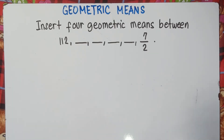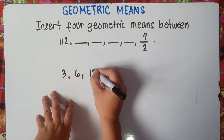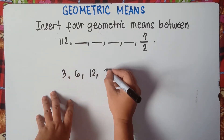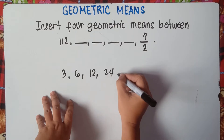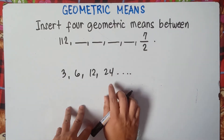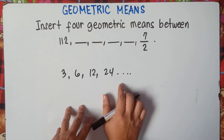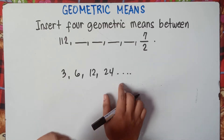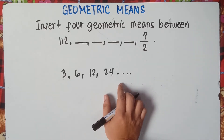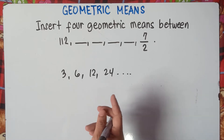Now class, before we answer this, do you still remember Geometric Sequence? For example: 3, 6, 12, 24, and so on. If the teacher asks you what will be the next number after 24, how will you get that number? Of course, you need to get the common ratio.